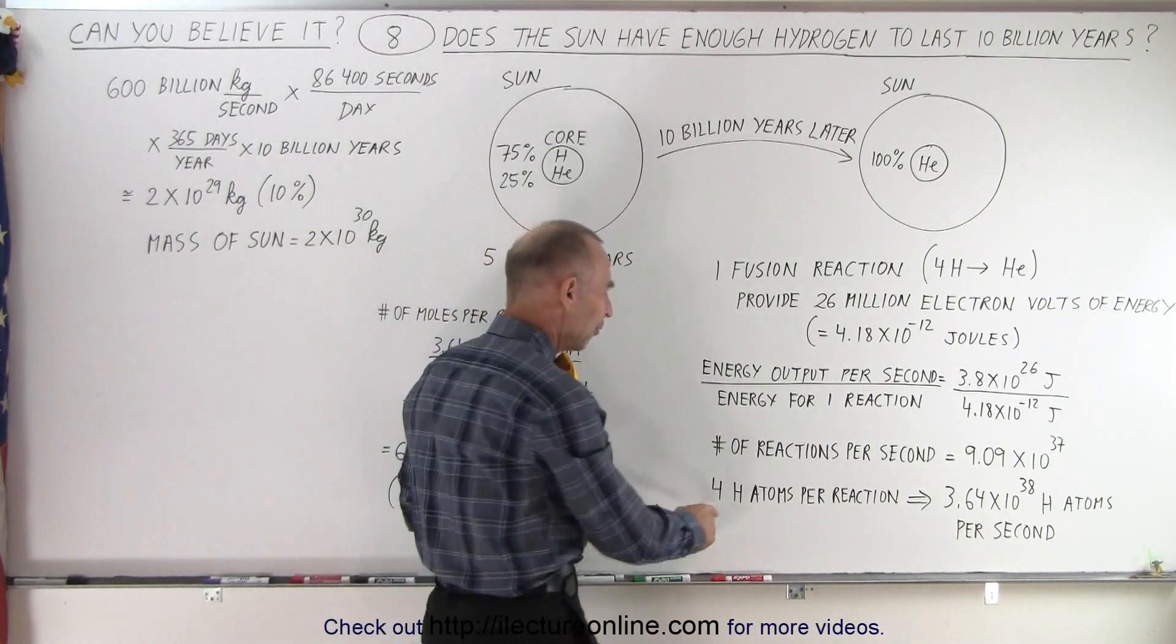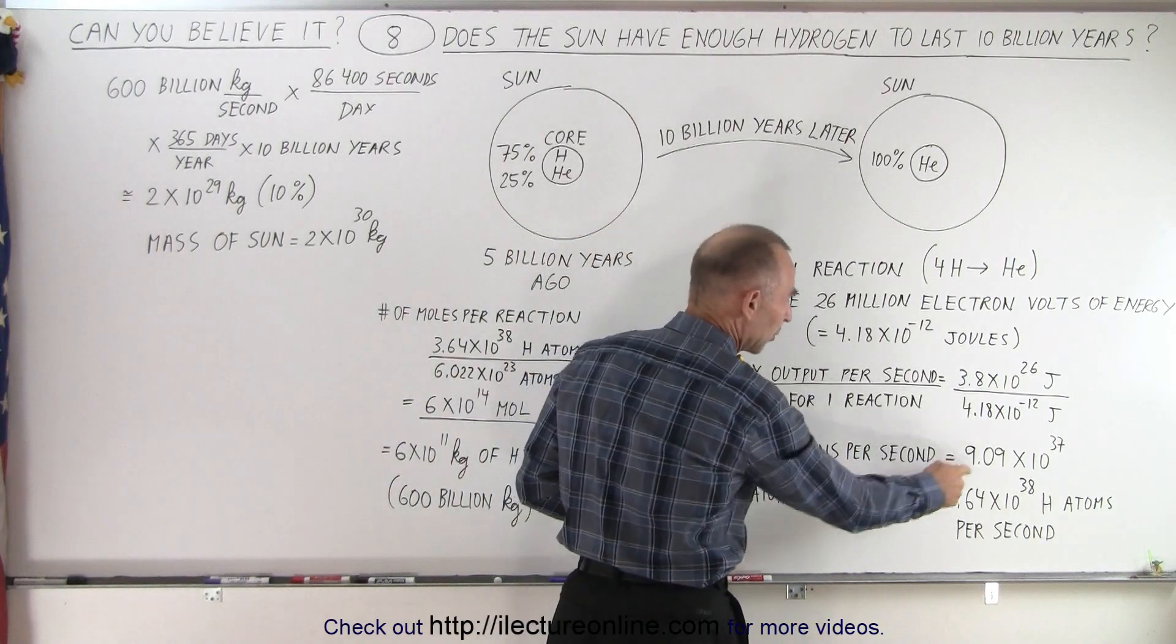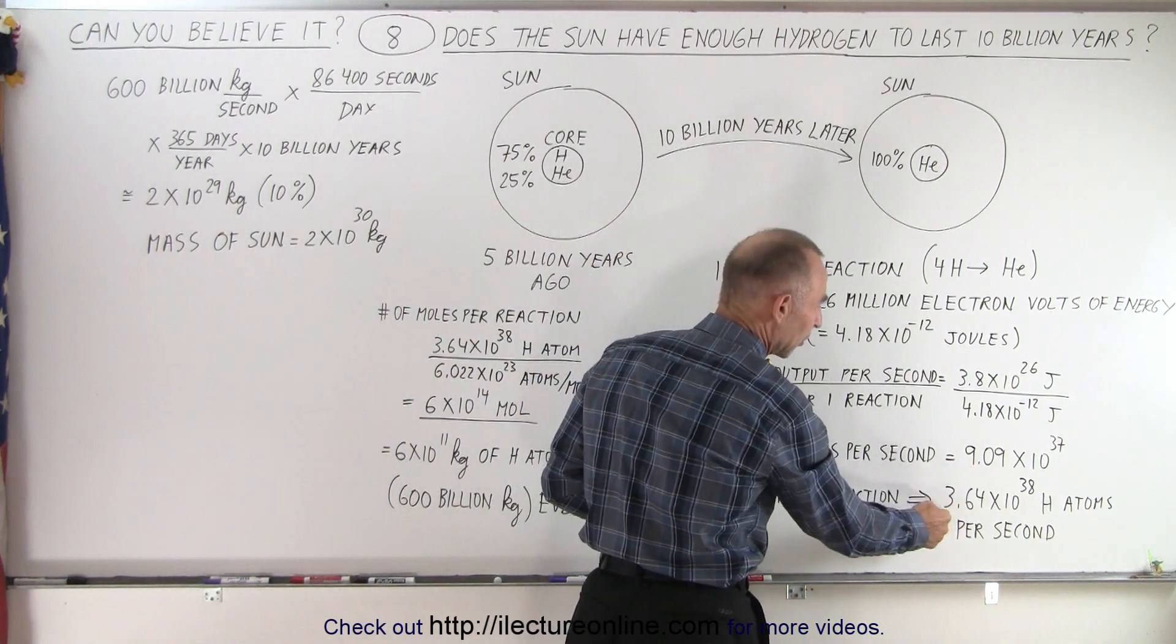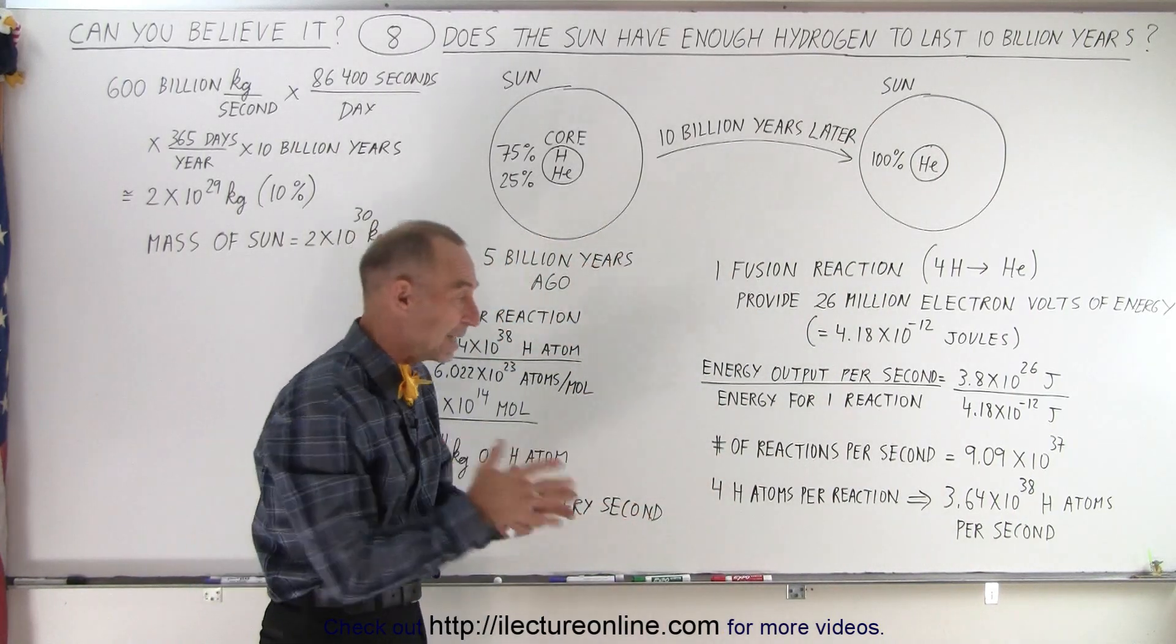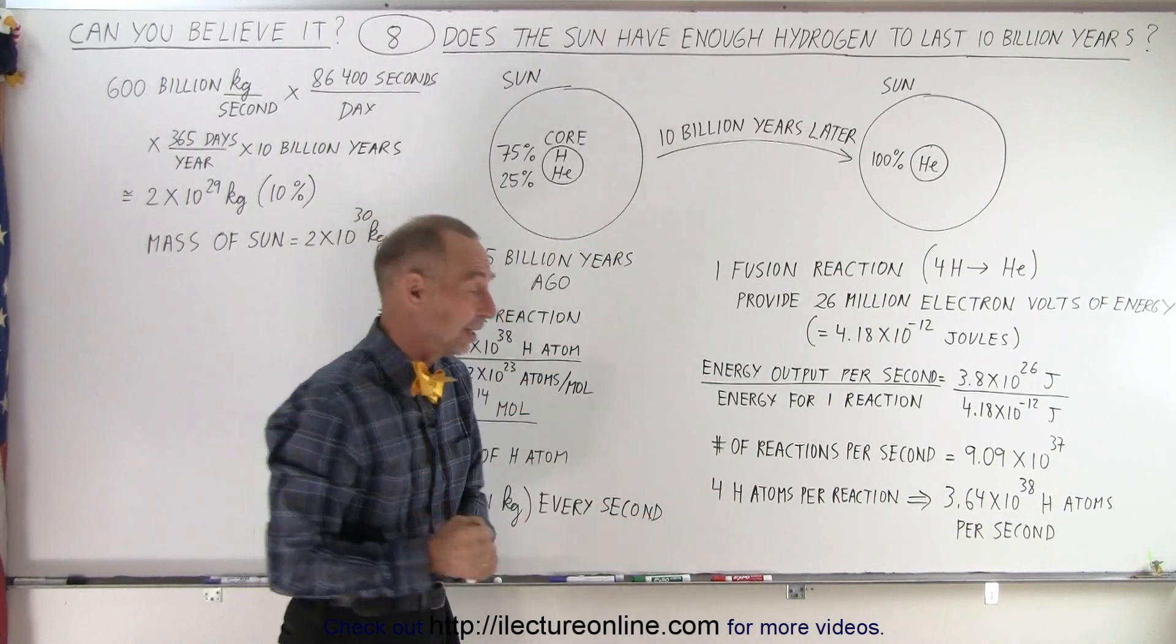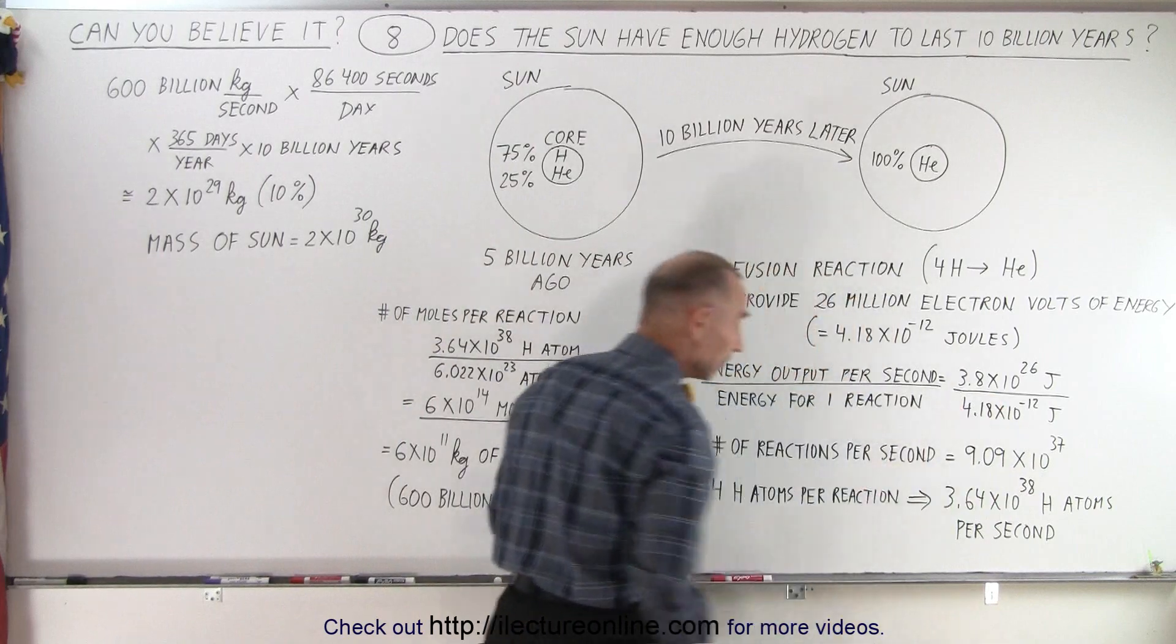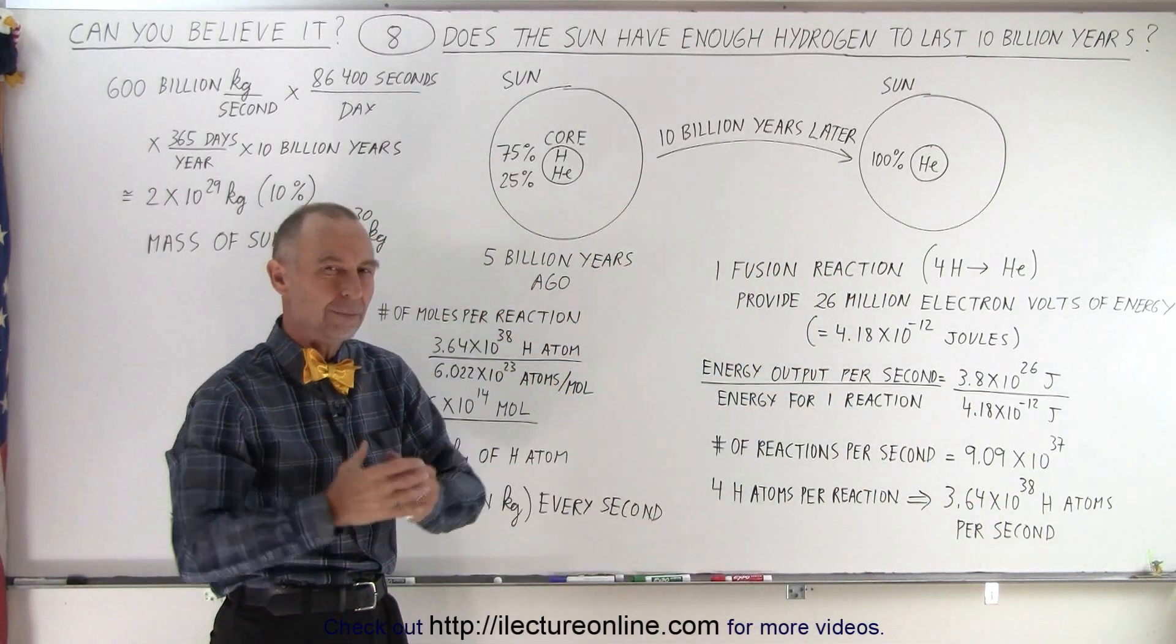Well, we have 4 hydrogen atoms per reaction, so we multiply this times 4, and we get 3.6 times 10 to the 38 hydrogen atoms being converted into helium every single second. That's a huge amount of hydrogen atoms. Can the Sun do that for 10 billion years?